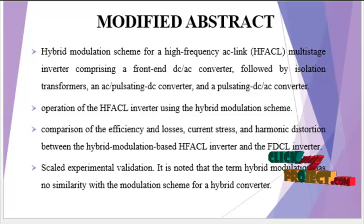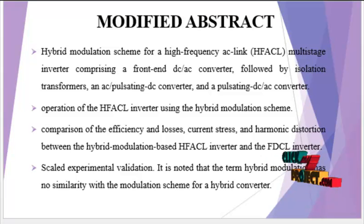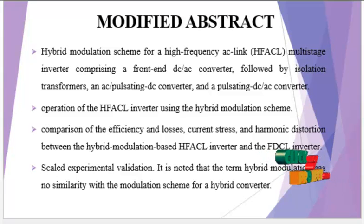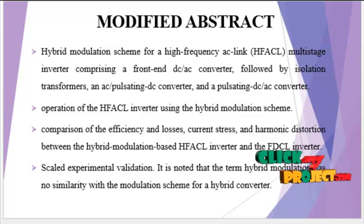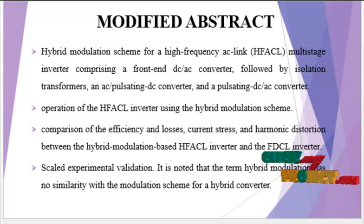We reduce the Switching Losses of the Invertor by reducing the High Frequency Switching Requirement of the Pulsating DC to AC Convertor by two-thirds. We also improve the Voltage Utilization and reduce the Current Stress. The Hybrid Modulation enables Sine Wave Modulation Switching at the output of the AC Pulsating DC to AC Convertor, rather than filtering the fixed DC.